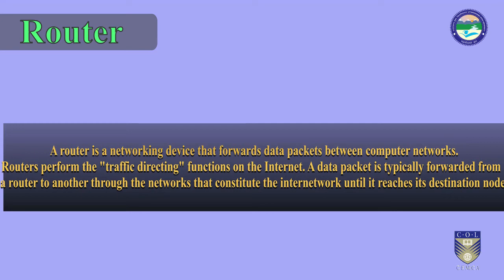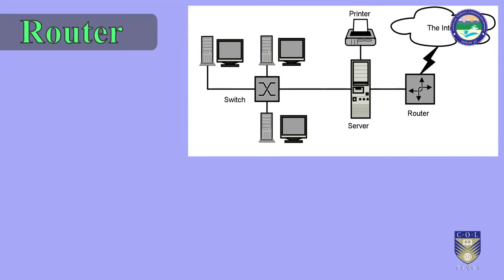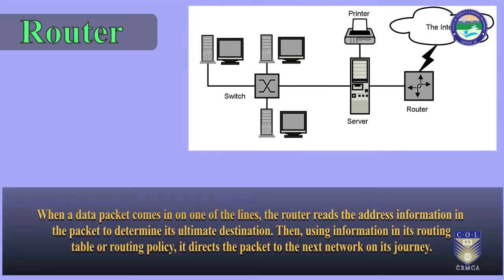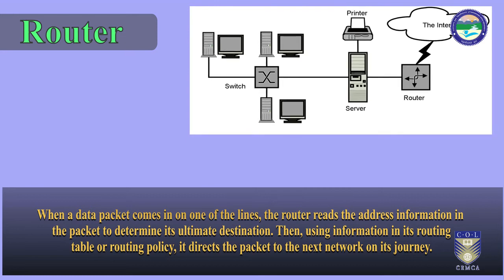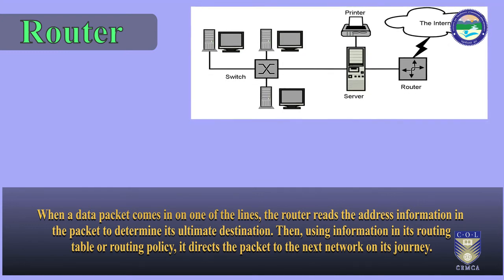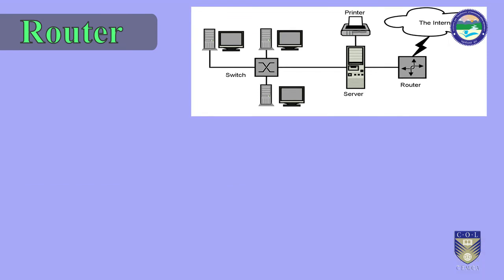A router is a networking device that forwards data packets between computer networks. Routers perform the traffic directing functions on the internet. A data packet is typically forwarded from one router to another through the networks that constitute the internet work until it reaches its destination node. A router is connected to two or more data lines from different networks, as opposed to a network switch which connects data lines from one single network. When a data packet comes in on one of the lines, the router reads the address information in the packet to determine its ultimate destination. Then, using information in its routing table or routing policy, it directs the packet to the next network on its journey, creating an overlay internetwork.